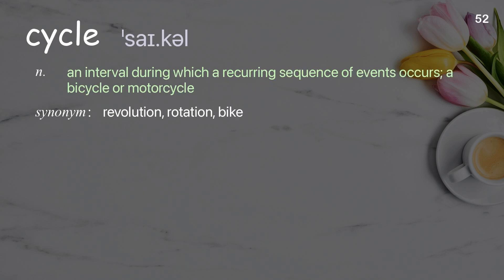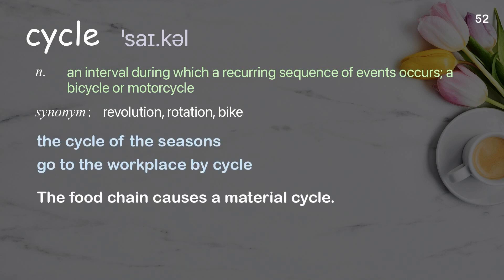Cycle: an interval during which a recurring sequence of events occurs; a bicycle or motorcycle. Examples: the cycle of the seasons, go to the workplace by cycle. The food chain causes a material cycle.